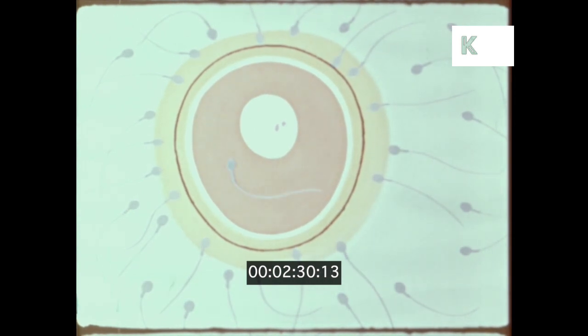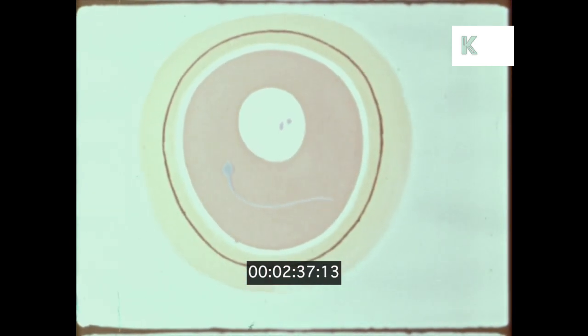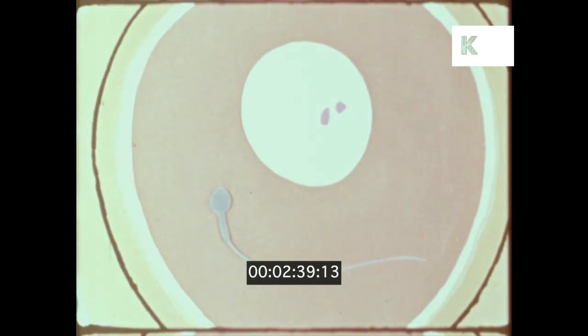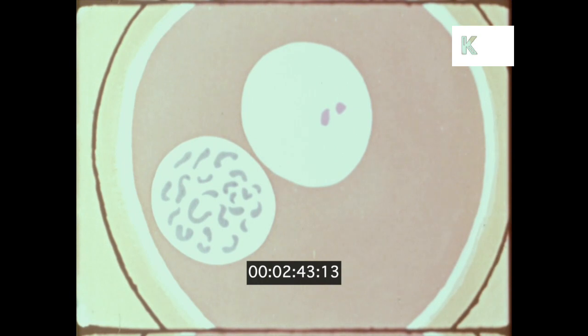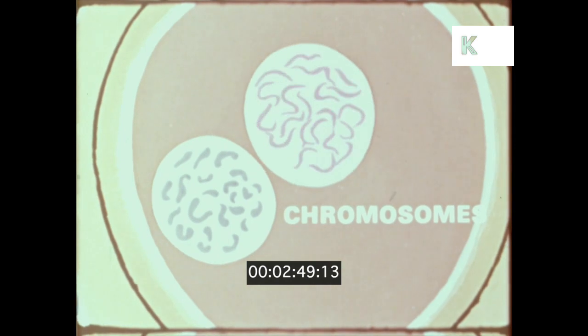This union of egg and sperm is called fertilization. What does the sperm cell bring to the egg? The nucleus of the sperm carries 23 tiny rod-shaped units which are the chromosomes. The nucleus of the egg cell also contains 23 chromosomes.